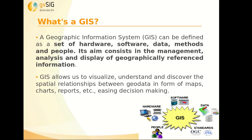On the other hand, a geographic information system is a set of hardware, software, data, methods, and people, with the objective of management, analysis, and display of geographical information. This information is georeferenced, and GIS allows us to visualize, understand, and discover spatial relationships between geodata in the form of maps, charts, etc. GIS makes decision-making very easy.